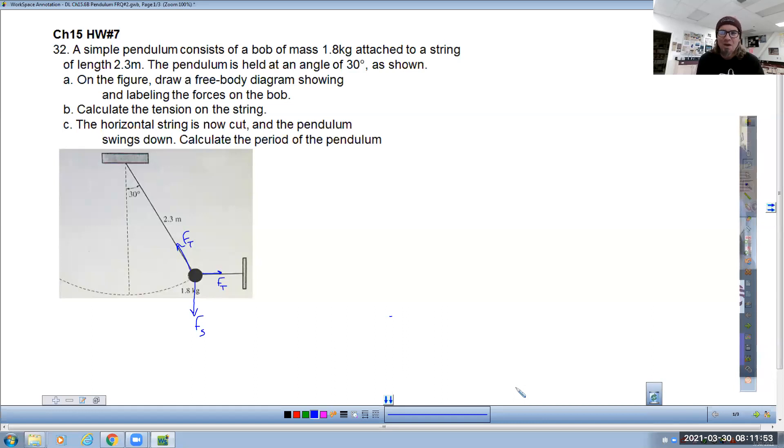Calculate the tension on the string. It doesn't say which string we're supposed to be calculating the tension on, so we'll calculate the tension on both strings. I'm going to call them T1 and T2. I'm going to make two F net equations: an X direction F net equation and a Y direction F net equation.